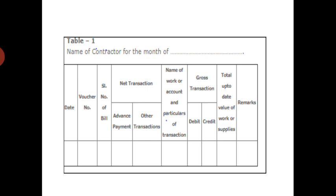The contractor has to keep one personal copy and in that personal copy he has to take the signature of the section officers — that is AJE — and of course the AE and EE signatures are not required on the contractor ledger. Only the AE signatures are required; of course one column will be there that may not be maintained.